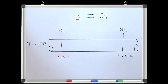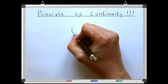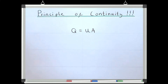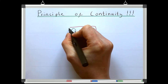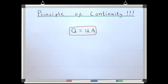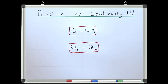For an unsteady pipe flow, the discharge is now changing with time, but for any particular instant in time, discharge would be the same at all points in the pipe. We know that Q equals UA, and that Q1 is always equal to Q2 for pipe flow where the pipe is full.